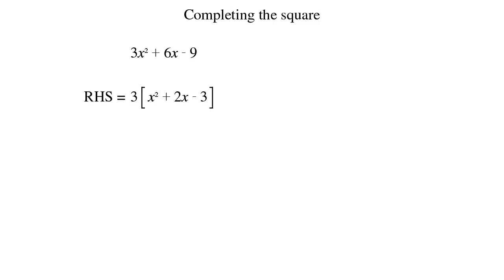And now we insert a bracket. x plus 1 squared minus 3 minus 1 squared, which is 1. So we have that 3 times x plus 1 squared minus 4. If we want, we could write this as 3 times x plus 1 squared minus 12.